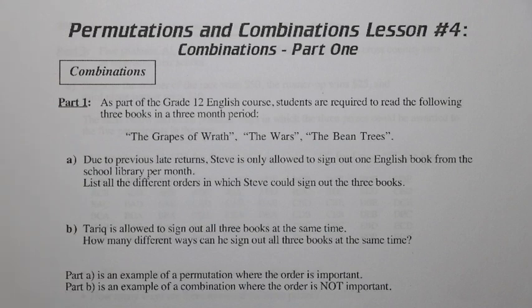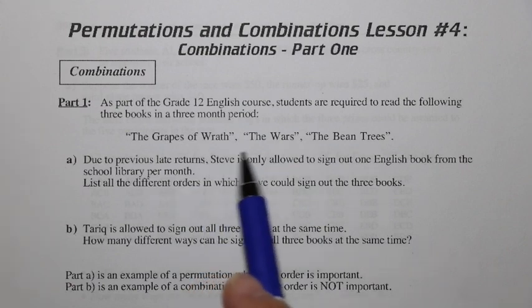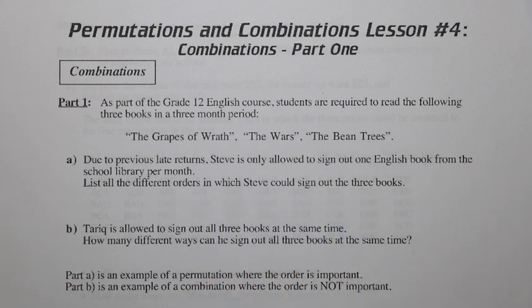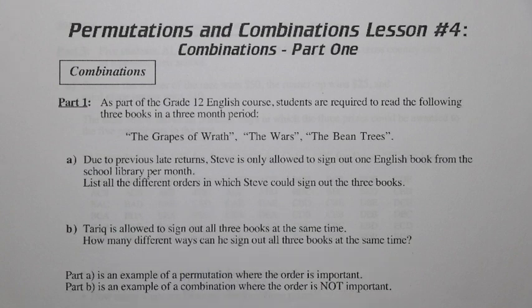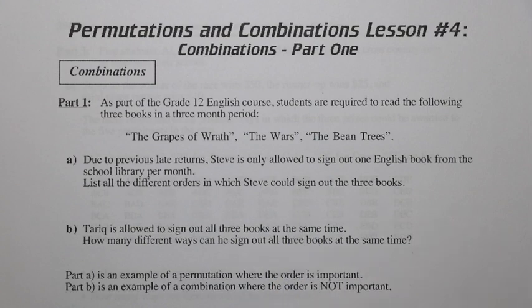We have a student who wants to read three books: The Grapes of Wrath, Wars, and The Bean Trees. Steve is only allowed to sign out one English book from the school library at a time. So let's list all the different orders in which Steve could sign out the three books.